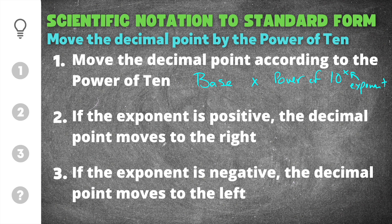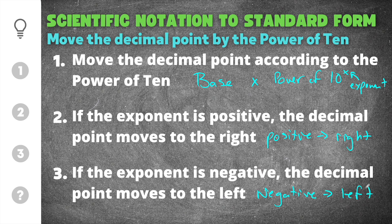That brings us to the next two important things: if that exponent is positive, the decimal point is going to move to the right, and if that exponent is negative, the decimal point is going to move to the left. An easy way to remember this is that a positive exponent gives you a large number and a negative exponent gives you a very small number.